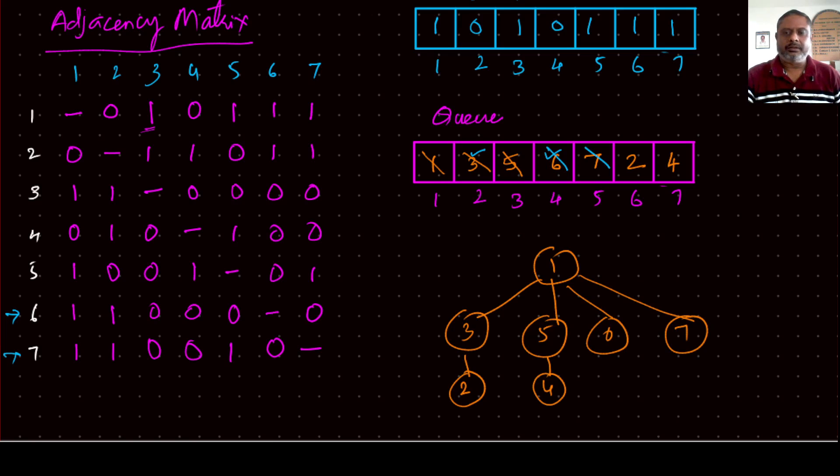Then who is remaining? Two. Next on the queue is two. Then get to row number two, the adjacency matrix. See, one cannot be used, so the next one will be three. Three already visited. Four, four is already on the queue, we cannot add again, therefore nothing to be done. Six, six already visited, seven already visited, therefore two's work is also over, then declare that two is visited.